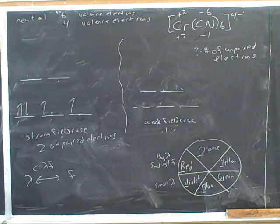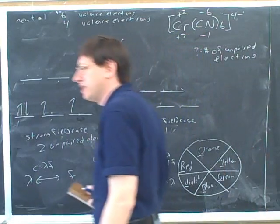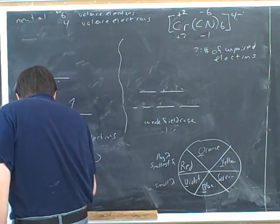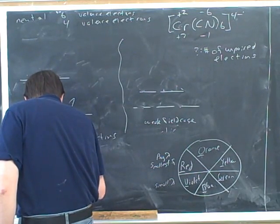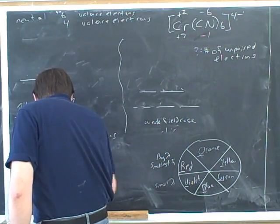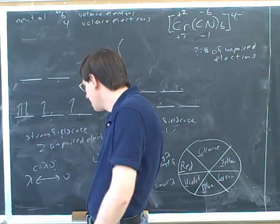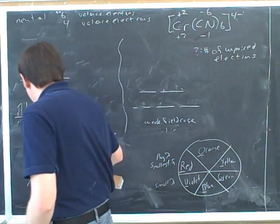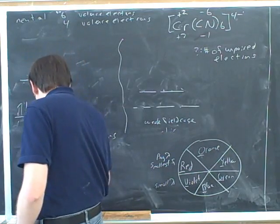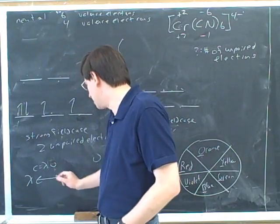I would generally write that like this, but then you can solve this for either lambda or frequency. Actually, some courses use nu for frequency. What's your course? Use nu or F? No, we use nu. You use nu. Okay. So nu is, it looks like a V, but it's the Greek letter nu. All right, so instead of F I'll put in the Greek letter nu.